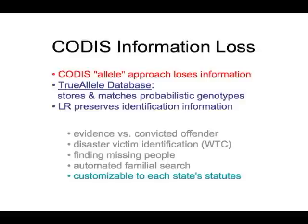The TrueAllele database stores and matches probabilistic genotypes and uses likelihood ratios to preserve identification information. It works for casework with convicted offenders and evidence, was used to reanalyze the World Trade Center data, is good for identifying missing people, and can do kinship calculations — all using probability distributions and likelihood ratios. Familial search is fully automatic, matching against family member genotypes the same way it matches against convicted offenders, with match rules customized to each state's or country's regulations.